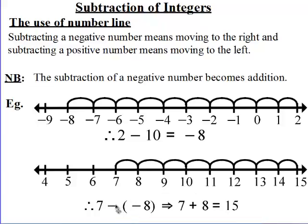So 7 minus minus 8, which is the same as 7 plus 8, is equal to 15.